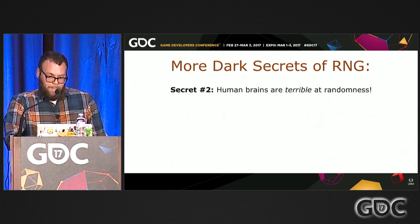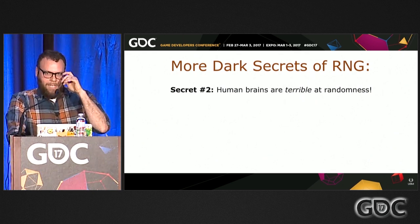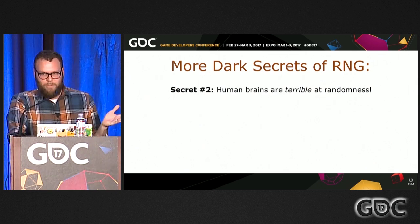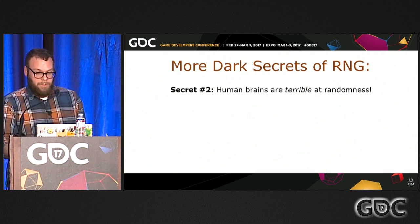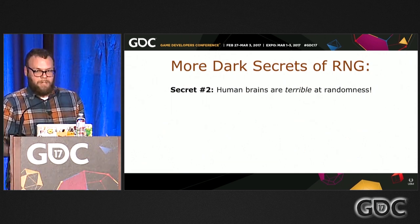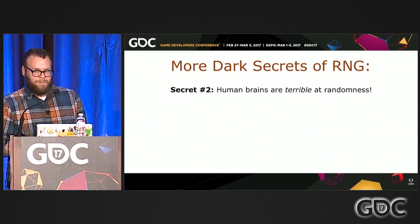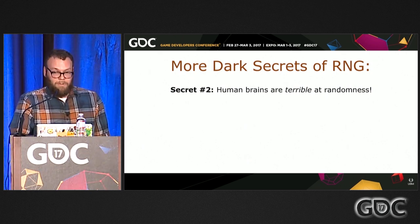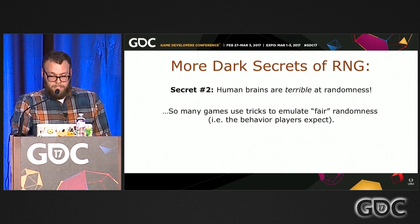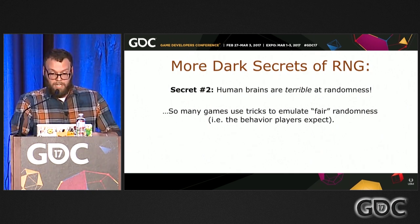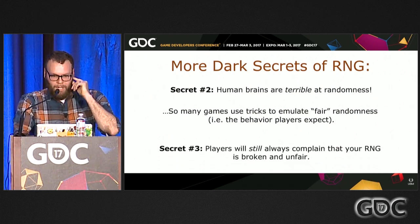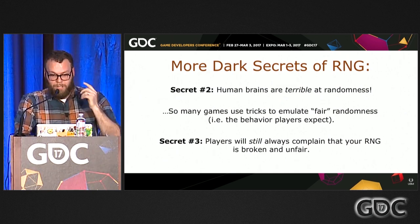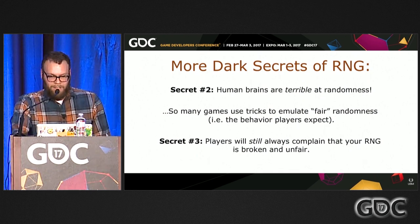The biggest dark secret of RNG is that human brains aren't great at dealing with probability. They misunderstand it easily. A player might know there's a 1% chance for something to drop and still go kill the enemy 200 times, and logically they could tell you they know it's possible for it not to drop, but they'll still complain loudly. A lot of our RNG tricks are there to emulate what players expect and make randomness work the way they intuitively expect it to, even though it's not mathematically true. Players will always complain the RNG is unfair and hates them.